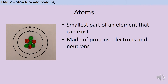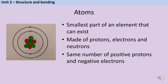There are the same number of positive protons and negative electrons. Because the charges on protons and electrons are the same size but opposite polarity, they cancel each other out. So because there are three positive protons and three negative electrons, overall the atom has no charge — we say it's neutral.